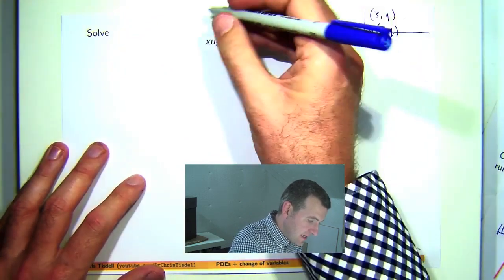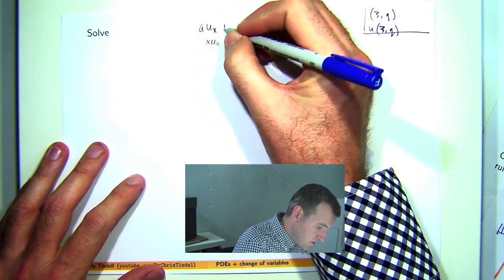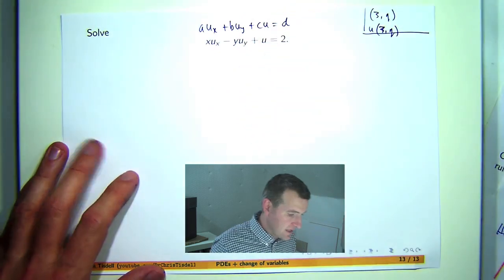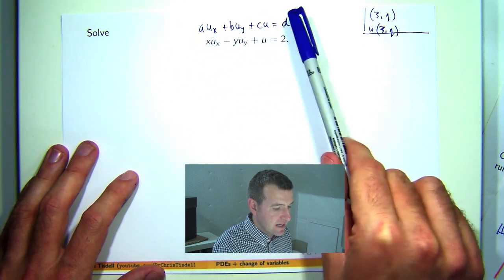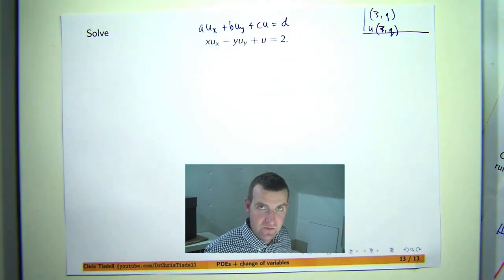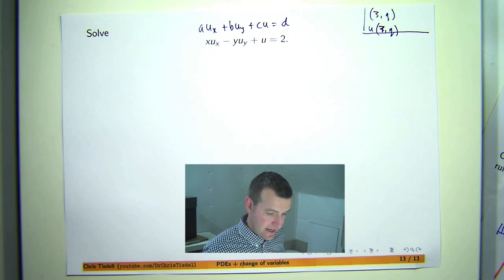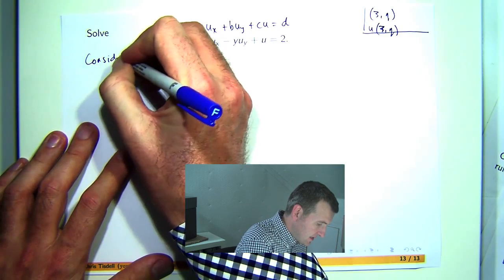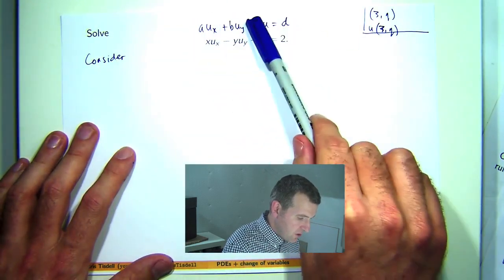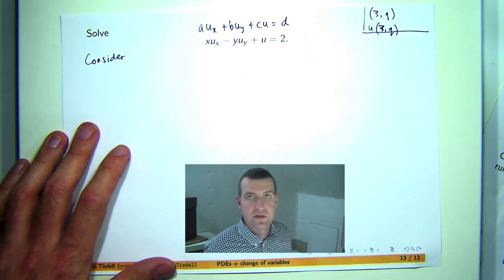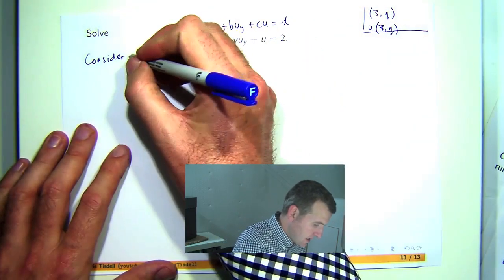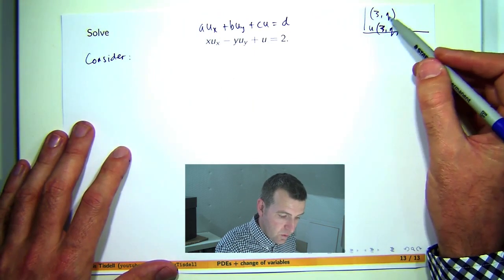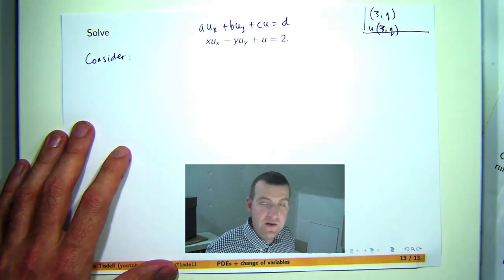So this PDE here is a special case of the following more general equation where a, b, c and d may depend on x and y. In this case we've got a equals x, b equals negative y, c equals positive 1 and d equals the constant function 2.